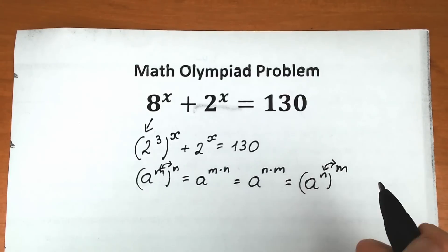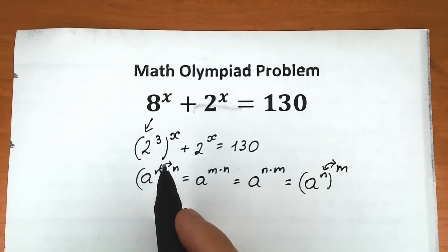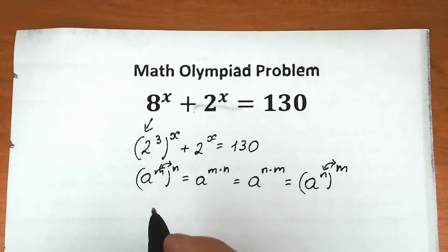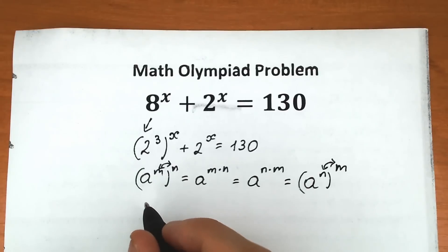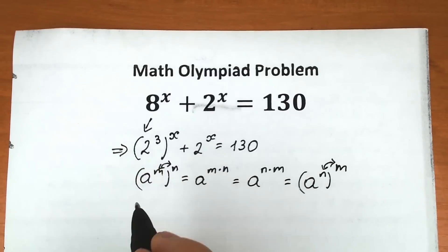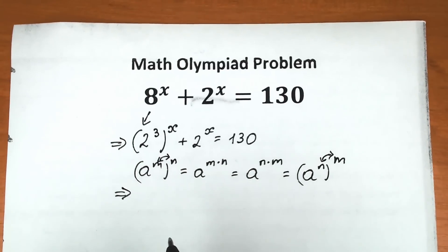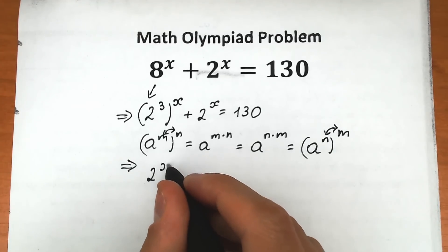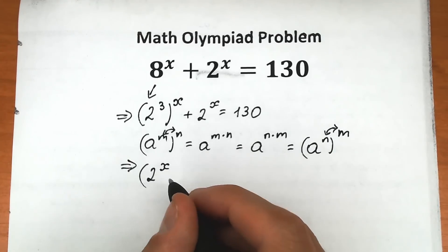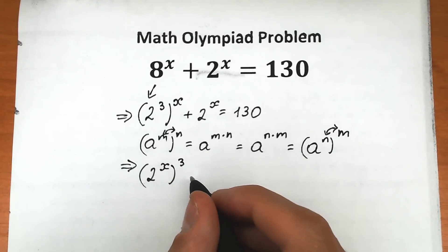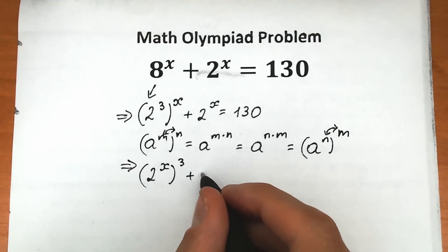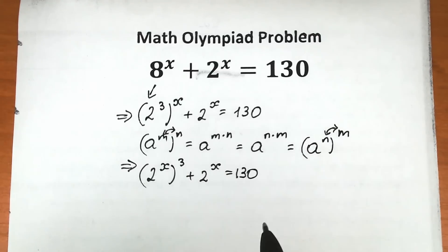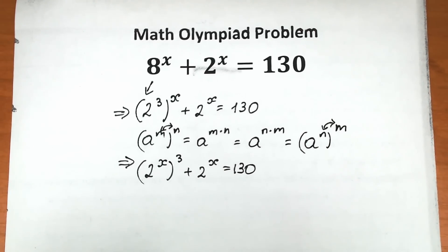This goes outside of parentheses and this goes inside. So as a result, let's write this as 2 to the power x, all to the power 3, plus 2 to the power x equal to 130. This is our expression right now.